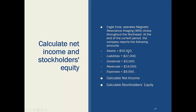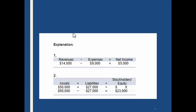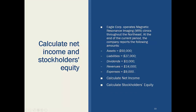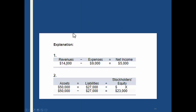So — Eagle Company has assets of $50,000 and liabilities of $27,000, plus dividends, revenues, and expenses. Let's calculate the net income. We have to know what net income is comprised of, and where assets, liabilities, and everything else fit. There are revenues of $14,000 and expenses of $9,000 — so there's the net income. Here's the stockholders' equity broken down. I want you to spend a little time going through that and see if you can figure it out.